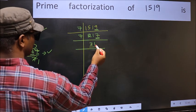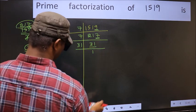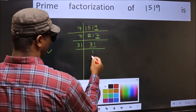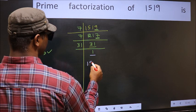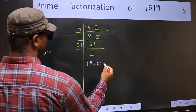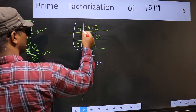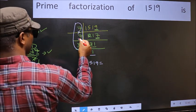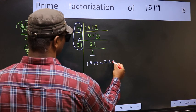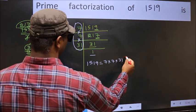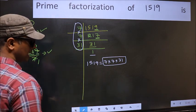Now we have 31. 31 is a prime number, so 31 times 1 is 31, and we get 1 here. So the prime factorization of 1519 is the product of these numbers: 7 times 7 times 31. This is the prime factorization of 1519.